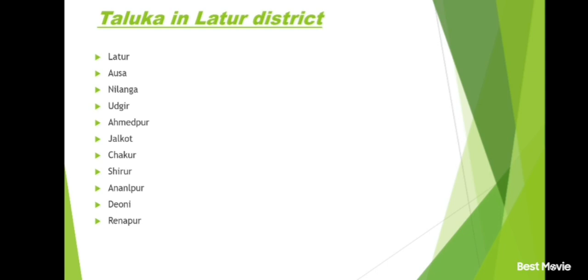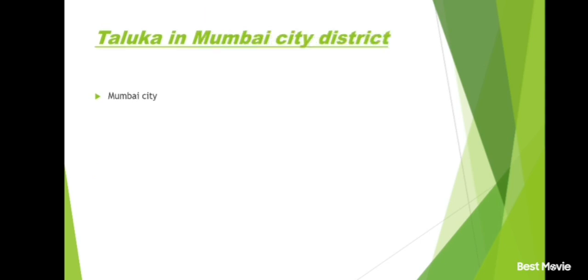Kolhapur district and its talukas: Karvir, Hatkanangle, Shirol, Kagal, Panhala, Gadhinglaj, Radhanagari, Chandgad, Shahuwadi, Bhudargad, Ajra, Gaganbawda.